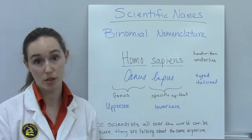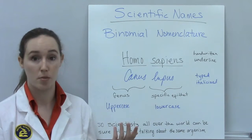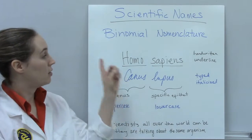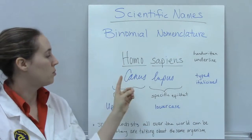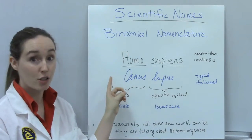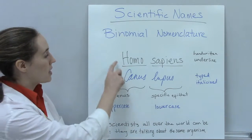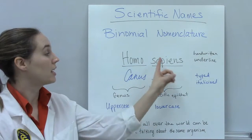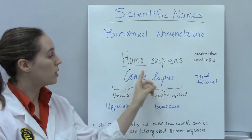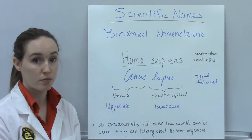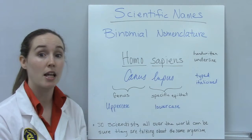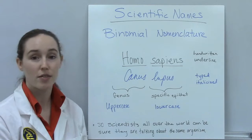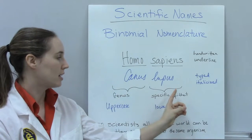There are three simple rules to naming an organism. The first is that within the species name, the genus — that's the first name — is always capitalized. The specific epithet, which is the second part of the name, is always written in lowercase. Lastly, if a name is being handwritten, it should be underlined, and if it's typed, it should be italicized.